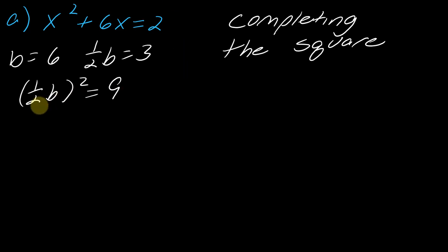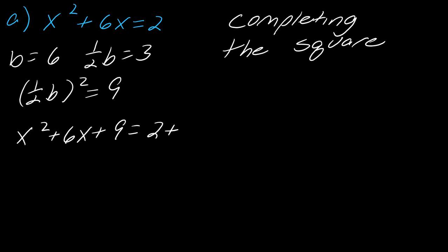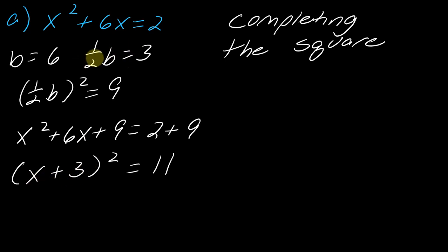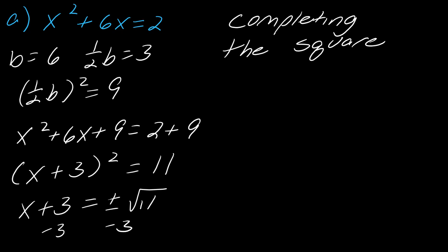Now that I have the half b squared value, I'm going to add it to both sides of the equation. So this becomes x squared plus 6x plus 9 equals 2 plus 9. This side factors as a perfect square, giving x plus 3 squared equals 11. One hint: if you forget how to factor this side, the plus 3 is always whatever your half b term is. From here, I use the square root property — take the square root of each side to get plus or minus the square root of 11, then subtract 3. So x equals negative 3 plus or minus the square root of 11.